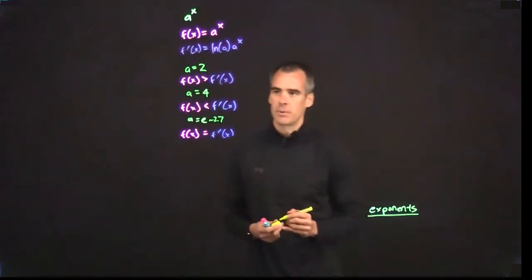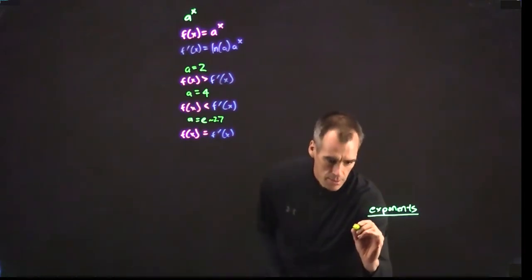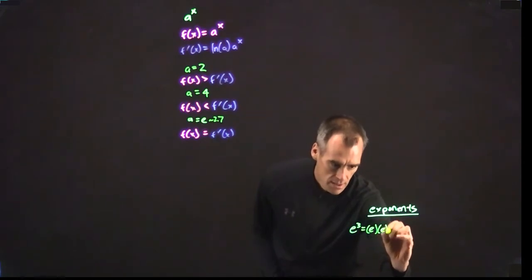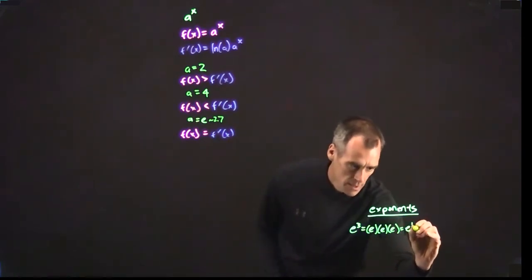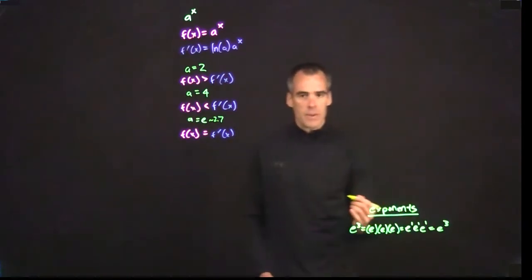So what is an exponent anyway? E to the 3, well you know that's just e times e times e. Pretty easy. Another way you could think of that is e to the 1 times e to the 1 times e to the 1, and you can just add up all these exponents, so that's e to the 3. Pretty basic.